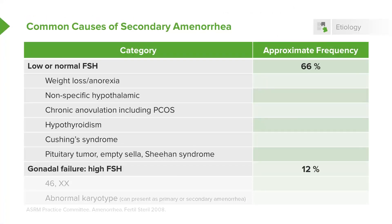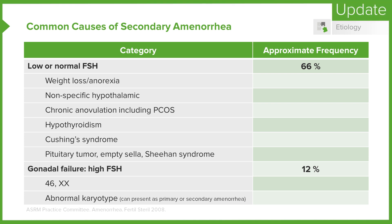A high FSH can also be a cause of secondary amenorrhea. This can occur with 46,XX individuals who have primary ovarian insufficiency, or with an abnormal karyotype that leads to early cessation of menstrual cycles, as is the case with Turner syndrome. The majority of Turner syndrome cases present with primary amenorrhea; secondary amenorrhea appears in less than 10% of patients, usually those with a partial deletion of the X chromosome or sex chromosome mosaicism.